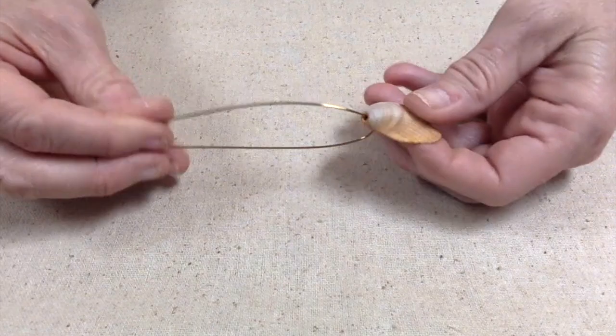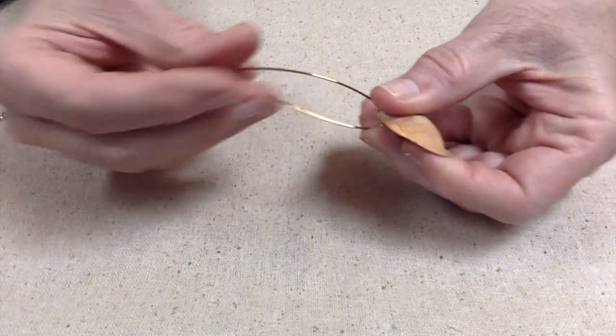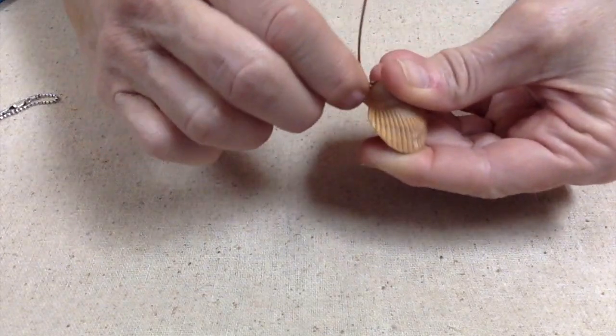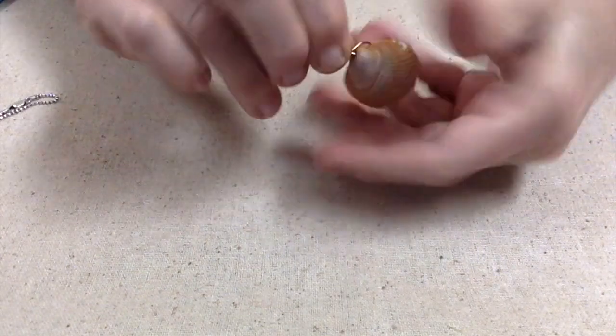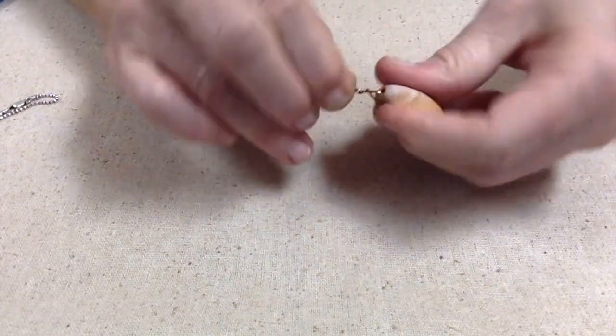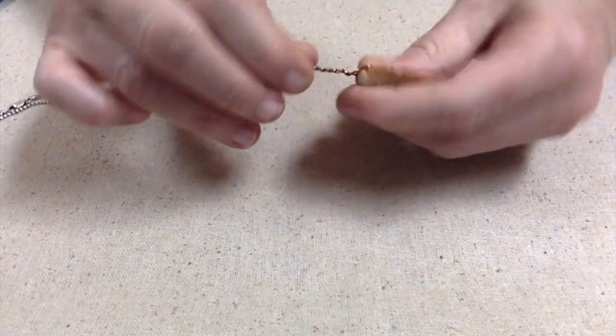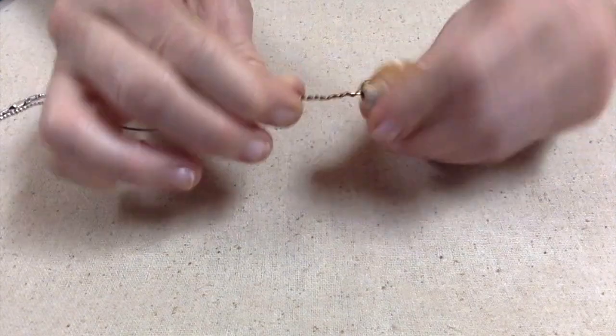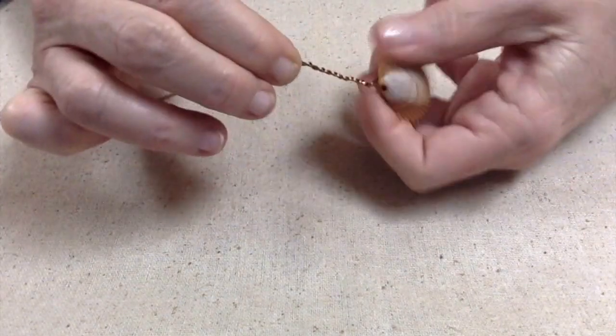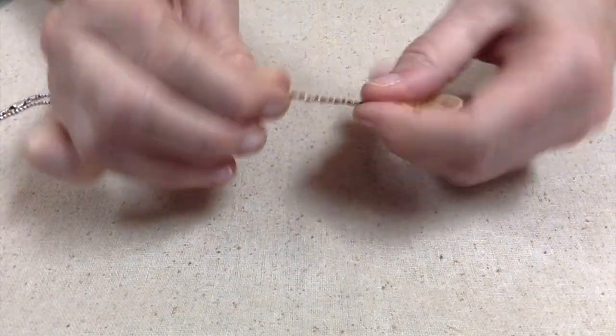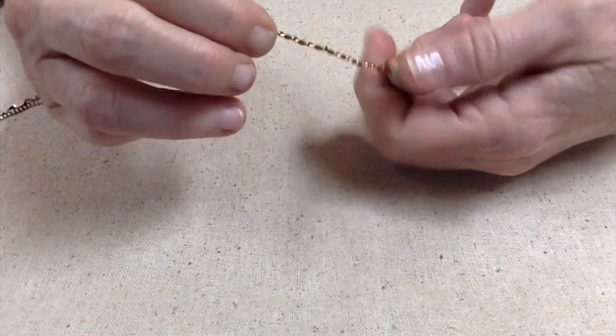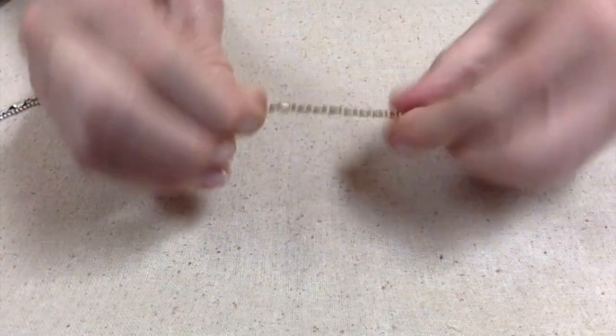So the next thing you do is you're going to cross these wires and you're just going to start twisting all the way up. It does not necessarily need to be neat. If it's messy, that's fine, because when you wrap it down and make the bail, you're really not going to see how messy or neat you did this part. But you do need to join these, just twisting them to make them as one piece.